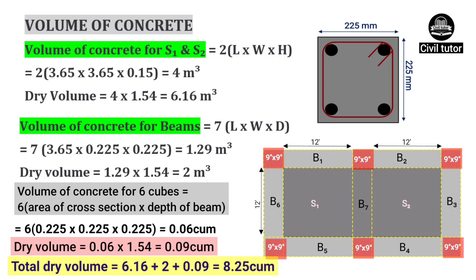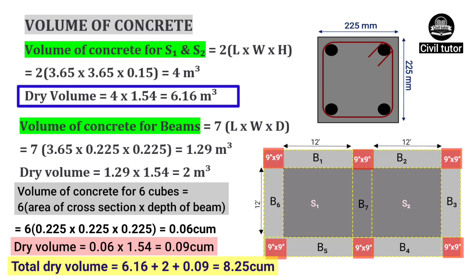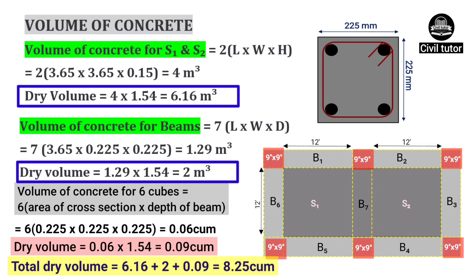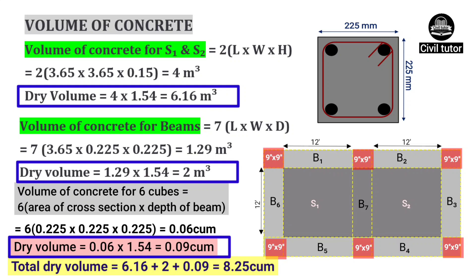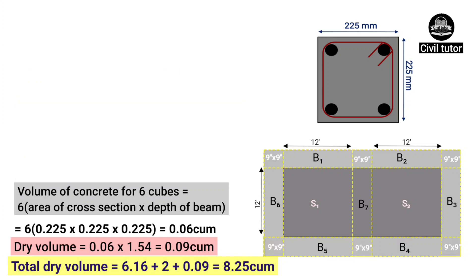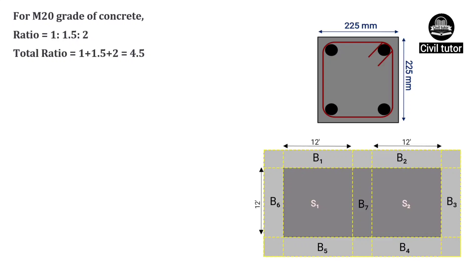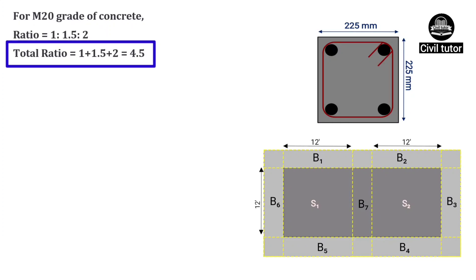Total dry volume will be equal to volume of S1 and S2, plus volume of 7 beams, plus volume of 6 square-shaped portions. Since we have used M20 grade of concrete, the ratio used for M20 is 1:1.5:2 — that is, 1 part of cement mixed with 1.5 parts of sand and 2 parts of aggregate. So the total ratio will be equal to 4.5.